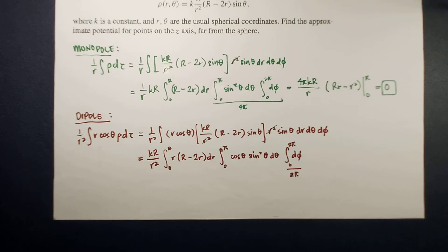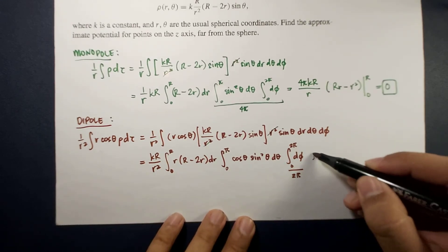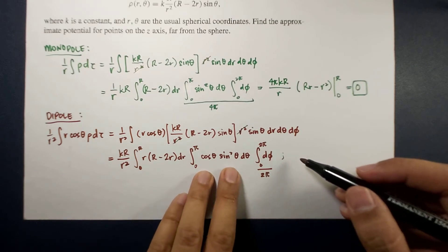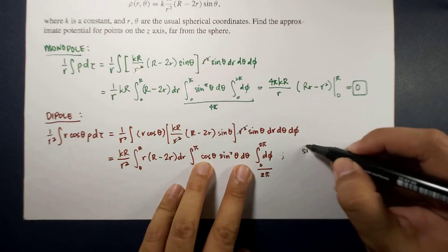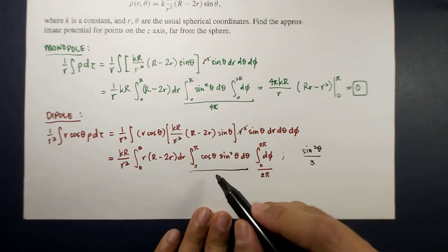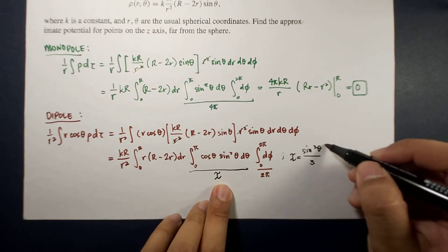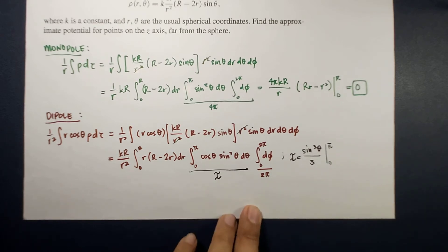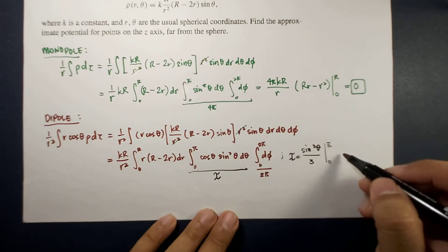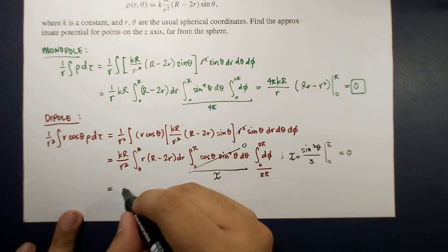Evaluating the theta integral: the integral of cosine-theta sine-squared-theta d-theta equals sine-cubed-theta over 3, evaluated from 0 to pi. Since sine(0) equals 0 and sine(pi) equals 0, this integral equals zero. Therefore the dipole contribution is also zero.